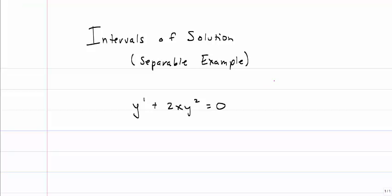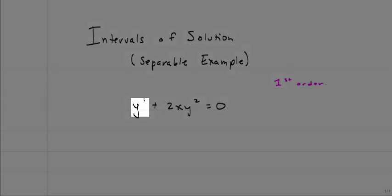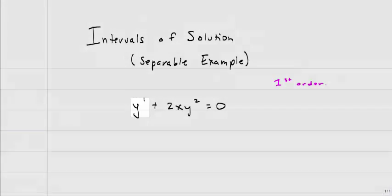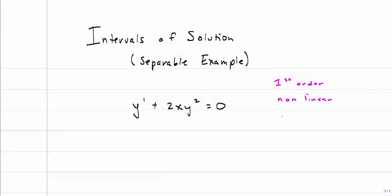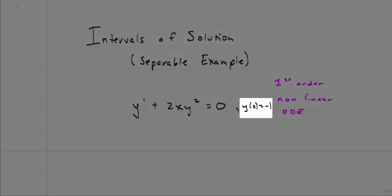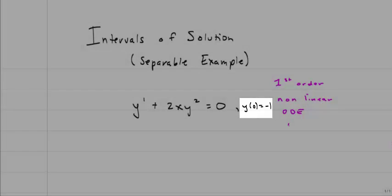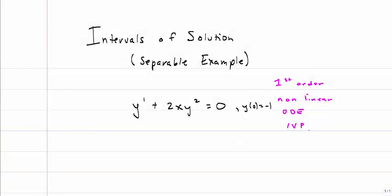For a little bit of review, this is a first order, because of the first derivative. It's nonlinear, that's because of the y squared, and it's an ODE. With the addition of this initial condition, it's now an IVP, an initial value problem.